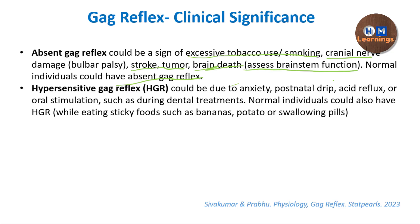The gag reflex can also be hypersensitive — triggered even by thinking about something touching the posterior pharyngeal wall (psychogenic), rather than an actual stimulus (somatogenic). Causes of hypersensitive gag reflex include anxiety, postnasal drip, acid reflux, oral stimulation during dental treatments, and normal individual variation when eating large or sticky foods such as bananas or potatoes, or when swallowing pills.